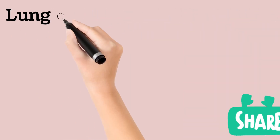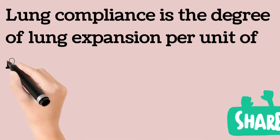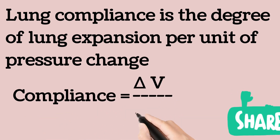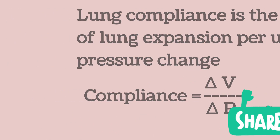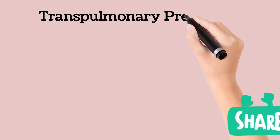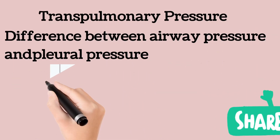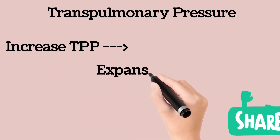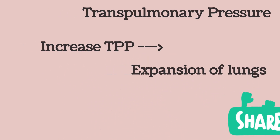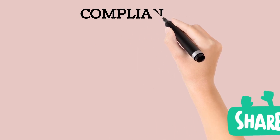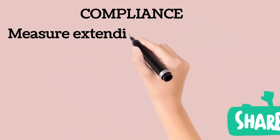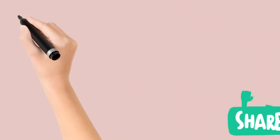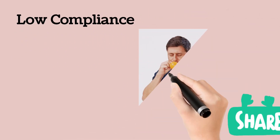Lung compliance is the degree of lung expansion per unit of pressure change. It is calculated by volume change divided by pressure change. Transpulmonary pressure is the difference between airway pressure and the pleural pressure; when there is increased transpulmonary pressure, it causes expansion of the lungs. Compliance measures the extensibility of the lungs. Higher compliance means it is easy to expand the lungs, and low compliance means stiff lungs or it is difficult to expand the lung.